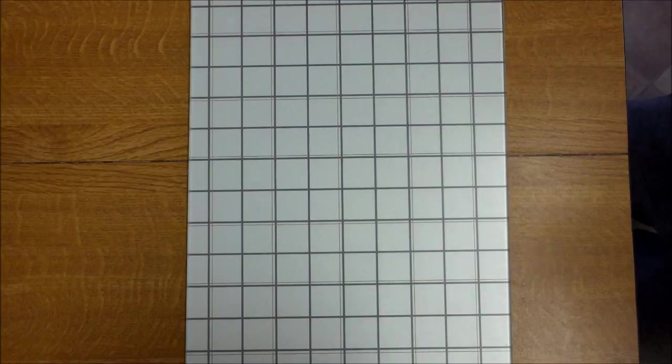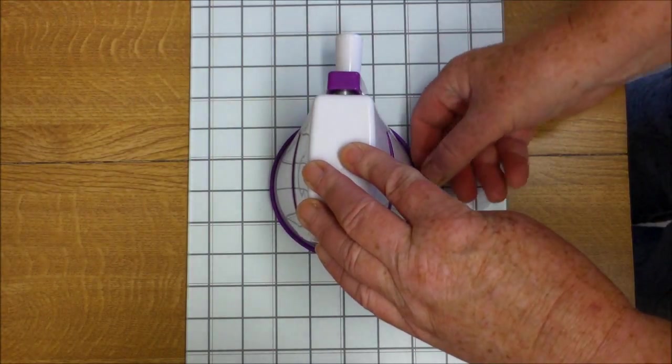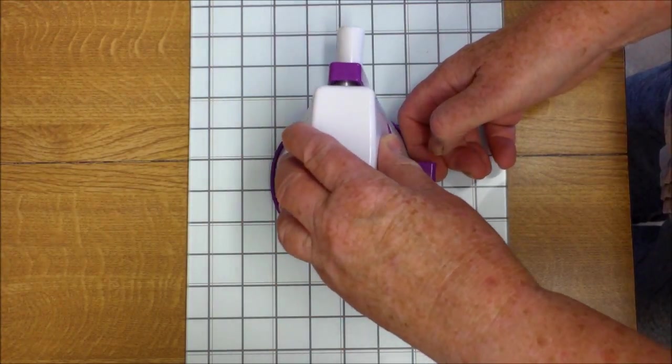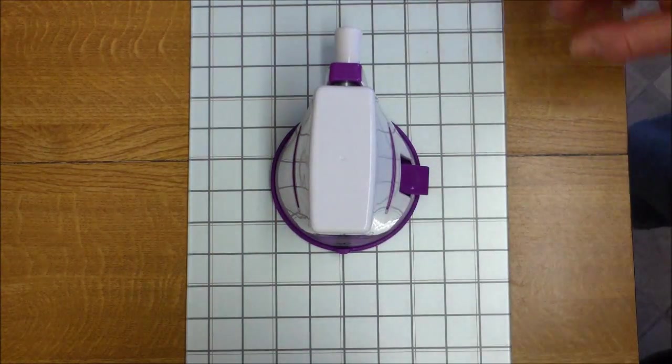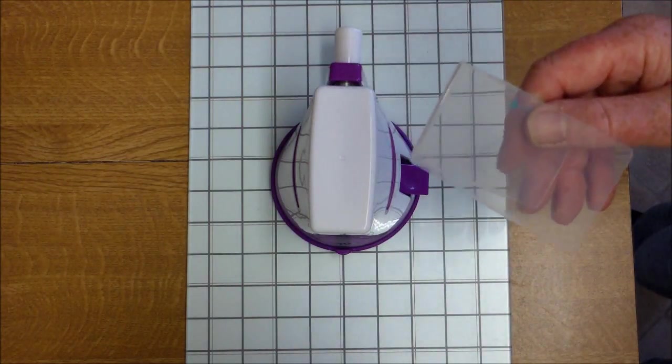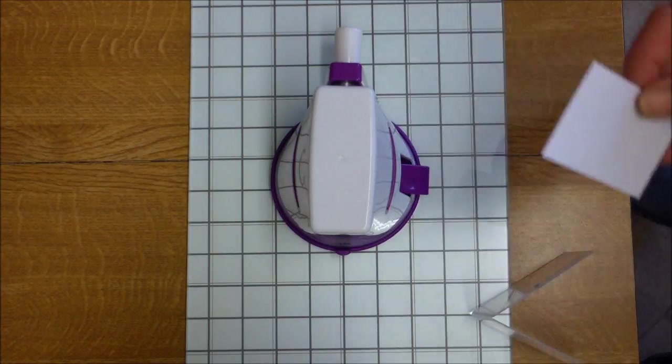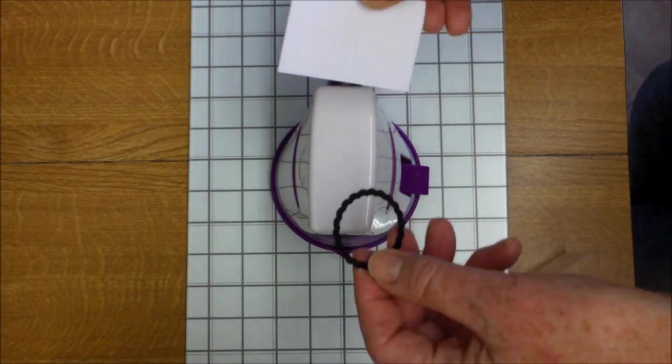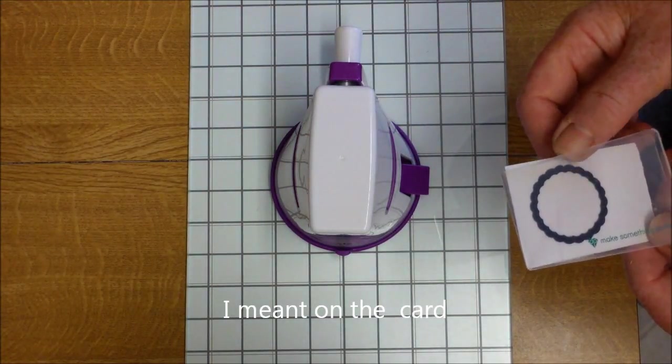The first machine is the Diamond Press. It's anchored to the plate. I'll start off by using a new die folder with a Diamond Press die. Take the die, put it on the folder, slip the whole lot through the machine.